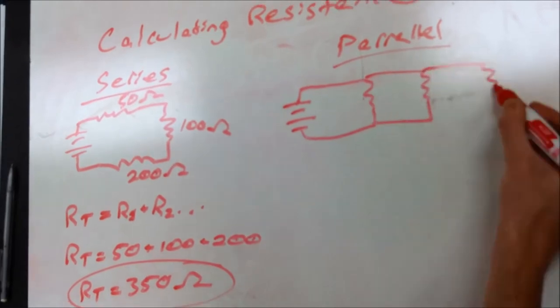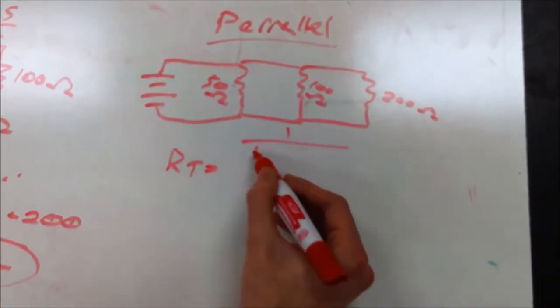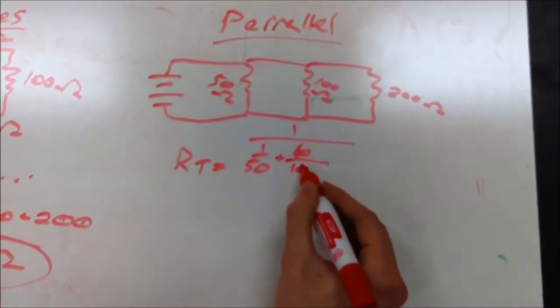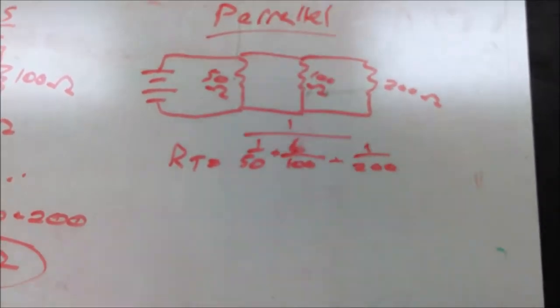It is more complicated in a parallel circuit, however. In this case, it is the reciprocal of the sum of each resistor's reciprocal. The equations for each are shown here.